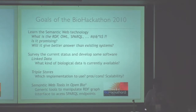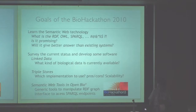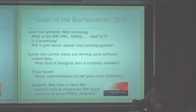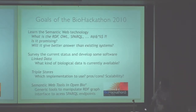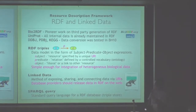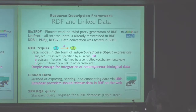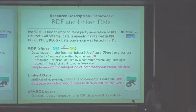Last year, we wanted to learn the semantic web technology — what is it all about, is it promising, and will it give better solutions for us? We surveyed several linked data resources and triple stores. We also discussed what kinds of semantic web supporting tools would be required in the open bio community. We already had Bio2RDF and UniProt as pioneer work, converting several biomedical resource databases into RDF.